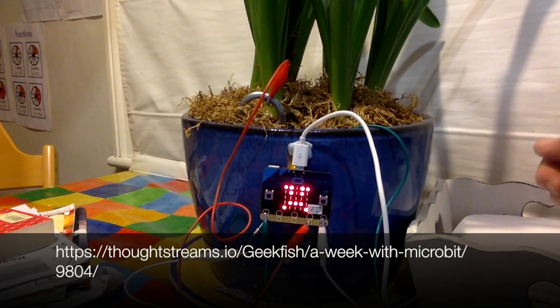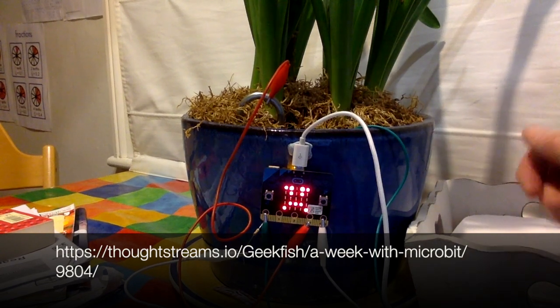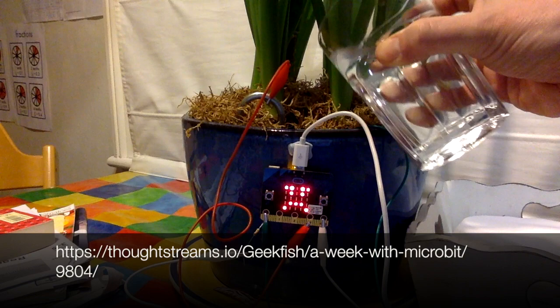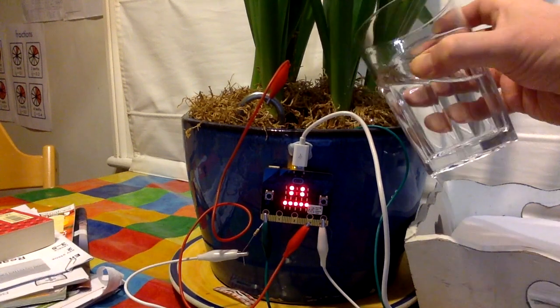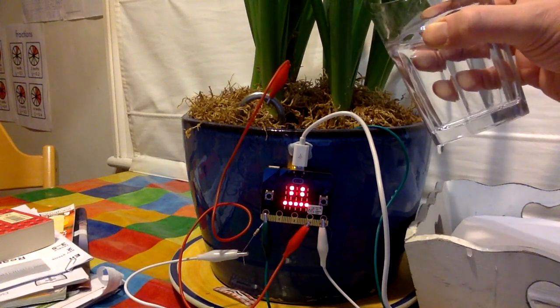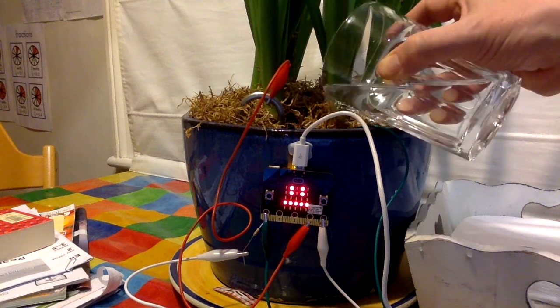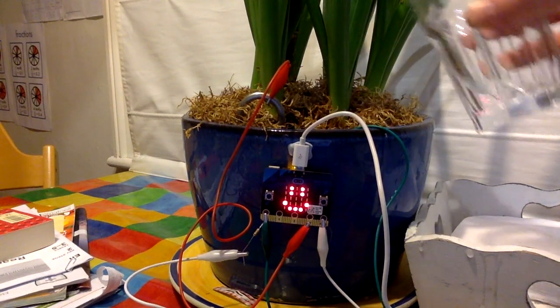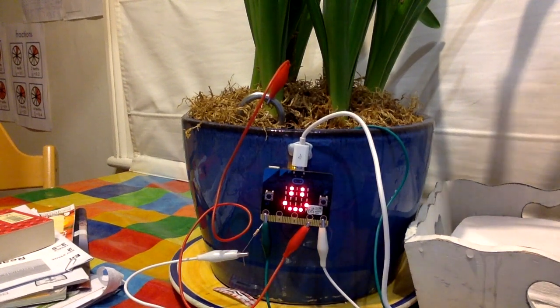Let's see what happens when I introduce some water, hopefully not to the microbit but to my plant. Let's see if it gets happy. Oh there we go. It is thinking about it. It's now middling. Let's put a bit more water in the plant and see if we can make it truly happy. There we go. Happy plant.